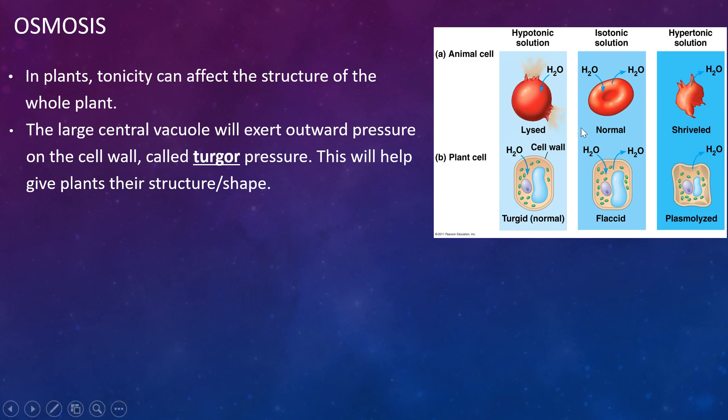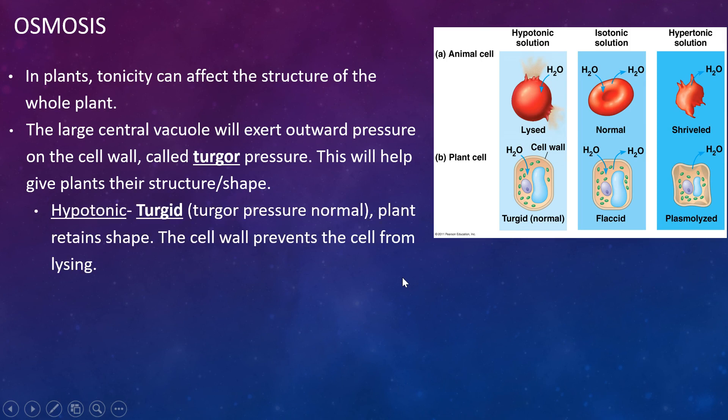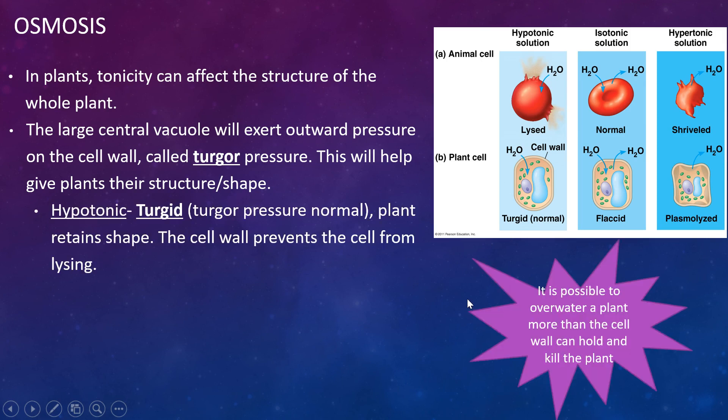Also, you can think about how animals, we can go get, like walk around and go get some water when we need it. Plants need to conserve their water and store it for longer periods of time. So they need to have more water stores in general. So they're going to have that normal for them would be in a hypotonic solution. It is possible to overwater a plant still and to have those cells burst, it's just much harder to do. Also, that cell wall is providing even more structure to prevent the cell from bursting as well.